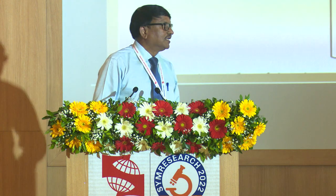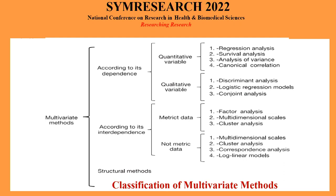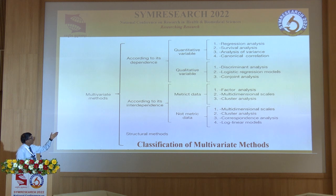Coming to the subject: what we have been listening to since morning — dependence and independence. If you see quantitative variables, you have regression analysis, survival analysis, analysis of variance. For qualitative outcomes, we have discriminant function analysis, logistic regression, and conjoint analogies.